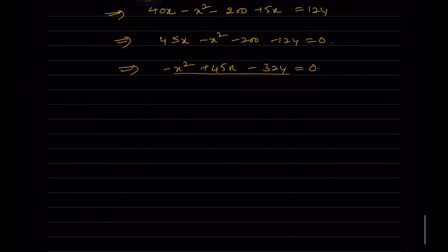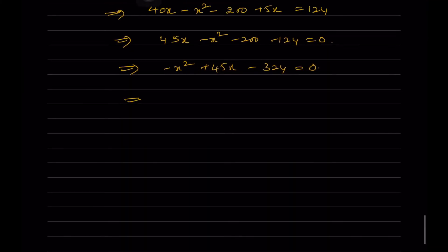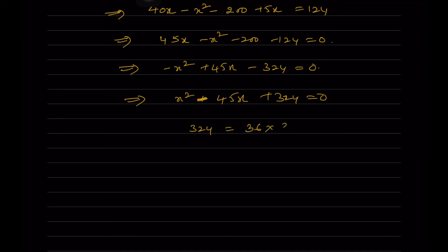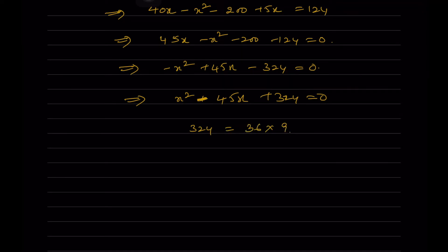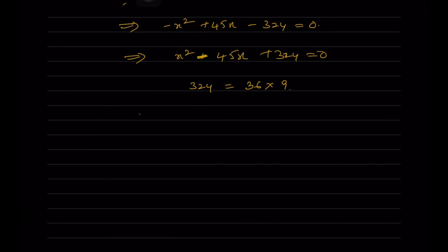The product of their marbles after losing 5 each is 124. So (x - 5)(40 - x) = 124, which gives 40x - x² - 200 + 5x = 124, which implies 45x - x² - 200 - 124 = 0.